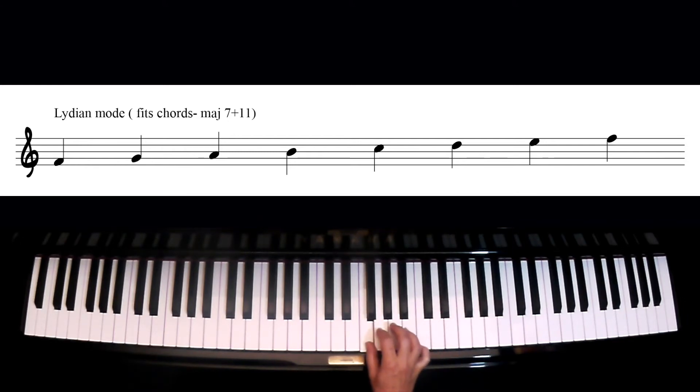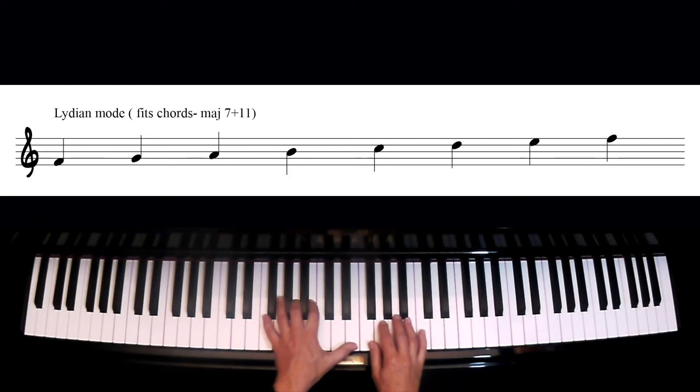So the characteristic of the Lydian mode is that it's a major scale, but it has a sharpened fourth. This is the fourth mode from C major, so it has no sharps and no flats, and this fits a nice chord of F major 7.